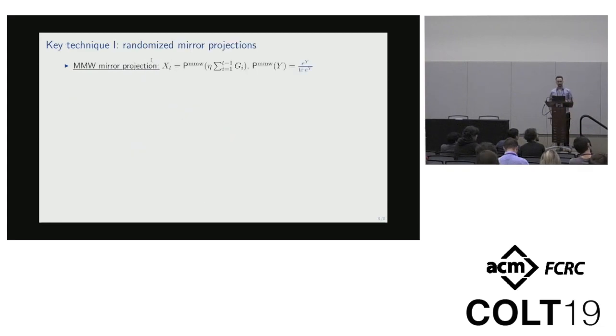Really, the key for our analysis is to take the dual averaging point of view of online learning. From a dual averaging perspective, the only thing that defines a procedure is how you map from the space of linear combinations of gains into the space of action. In our case, gains live in symmetric matrices and actions live on the spectrahedron. What matrix multiplicative weight does is map them through this mirror projection, which is the exponential divided by the trace.